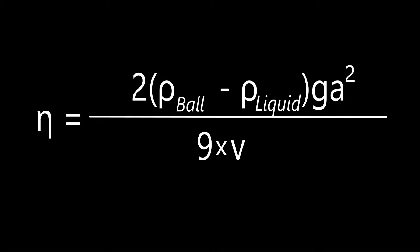This is the formula we're going to be using today. It is eta, which is a Greek letter, equals 2 times the density of the ball, rho, minus the density of the liquid, which is also rho, times the gravitational acceleration, times the radius to the power of 2.